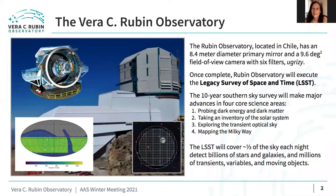Rubin Observatory is being built on Cerro Pachon in Chile, the same mountain which hosts the Gemini South and Solar Observatories. The Rubin Observatory will house the Simonyi Survey Telescope, which has an 8.4 meter primary mirror. The LSST Science Camera has a 9.6 square degree field of view and six optical to near infrared filters: UGRIZY. Once construction and commissioning are complete, the Rubin Observatory will execute the 10-year Legacy Survey of Space and Time, the LSST, an optical imaging survey of the southern sky starting in a few years.